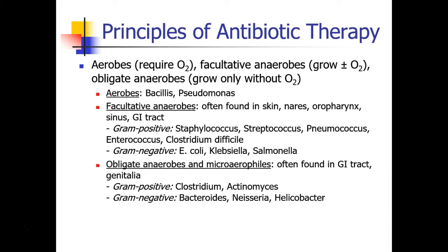Aerobic bacteria include Bacillus and Pseudomonas. Facultative anaerobes, which are often found in the skin, nose, oropharynx, sinus, and GI tract, come in both Gram positive and Gram negative types. Gram positive facultative anaerobes include staph and strep, pneumococcus, enterococcus, and clostridium, especially Clostridium difficile or C. diff. Gram negative facultative anaerobes include E. coli, Klebsiella, and Salmonella.